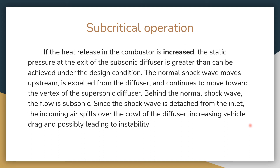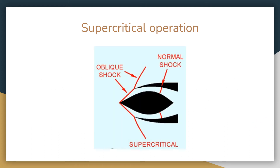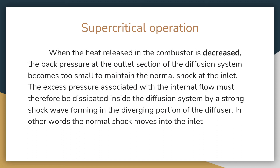The next condition is supercritical operation. If an engine operates above the design condition — for example, if the design range is Mach 4 to Mach 6 and the engine operates above Mach 7 or Mach 7.5 — this supercritical condition occurs. As seen in the diagram, the oblique shock is exactly placed at the inlet, but the normal shock moves inside and is positioned just before the combustion chamber or inside the subsonic diffuser. This is because the heat released in the combustor is decreased.